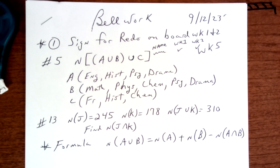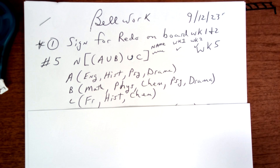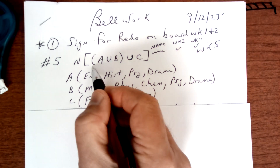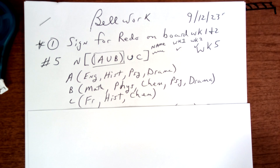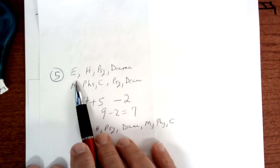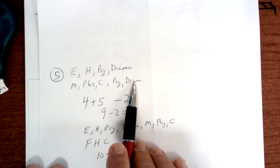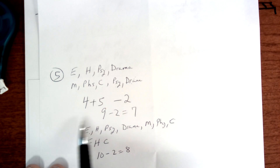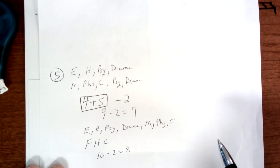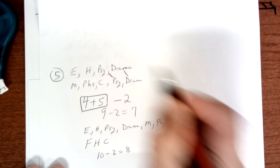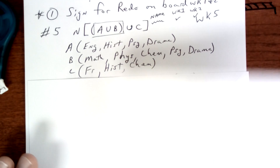Let's look at number five. The answer is eight. I would do these two first using the rule of exclusion. We have English, history, psychology, and drama — then math, physics, chemistry, psychology, and drama. If you add them up, one through nine, you get nine. But the overlap is two, so if you subtract two you get seven.